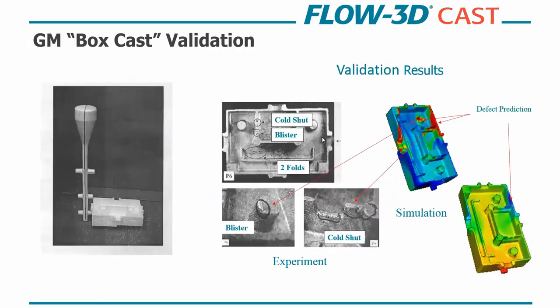And so this was the proposed casting given to us by GM. This was called the GM box cast. And although it looks simple, the part has many different qualities that give castings trouble. So you have posts, partitions, sections of differing thickness. And the experiment was gated in a non-optimal way. And this was done to increase the likelihood of defects that we would see. And then we ran simulations on this, and we were able to validate pretty much every defect that was seen. So blisters and cold shuts seen here in the bosses, and then also folds that we were able to analyze. So this was a big success for us.